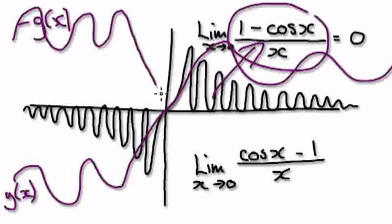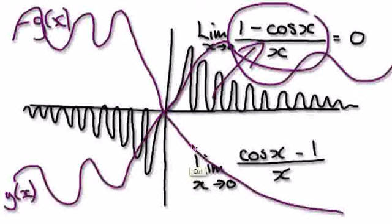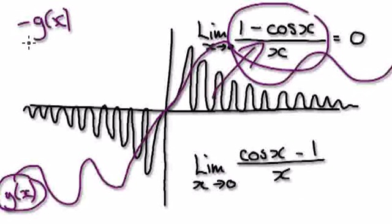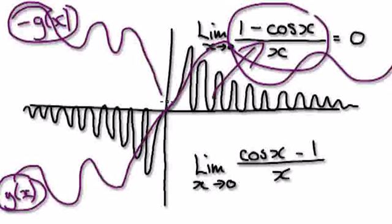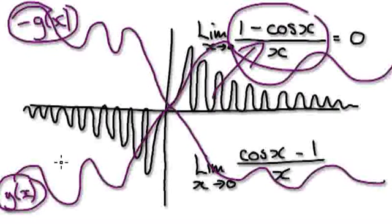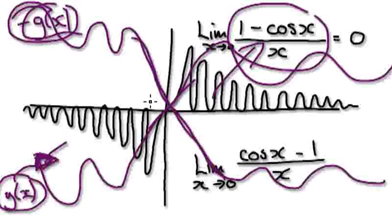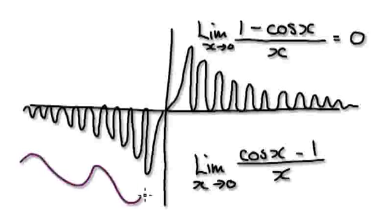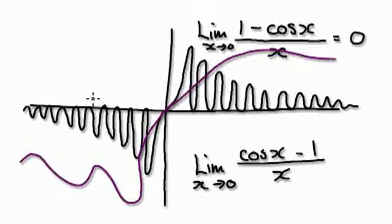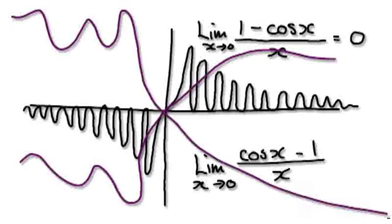No matter what function you have, if you get the negative version — because whatever function you have, if the limit heads towards 0, if it goes through 0, then the negative version will also go through 0. Even though there's a gap at 0, my point is that no matter what function you have, if you know the limit is 0, the negative version of this function will also be 0.